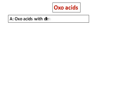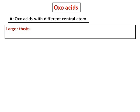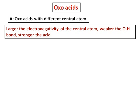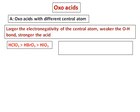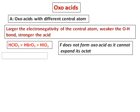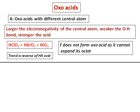Let's take some examples on oxoacids. For oxoacids with different central atoms, a larger electronegativity of the central atom weakens the O–H bond so it can be lost more easily, making the acid stronger. Consider HClO₃, HBrO₃, and HIO₃: Cl is more electronegative than Br than I, so HClO₃ is stronger. Note that fluorine is not considered here because it doesn't form an oxoacid — it cannot expand its octet. This trend is reversed compared to HA-type acids.